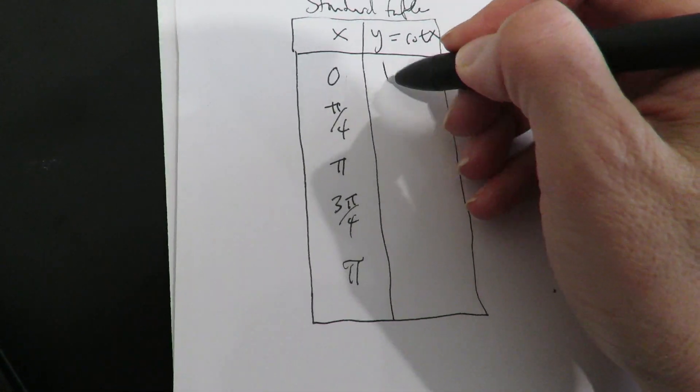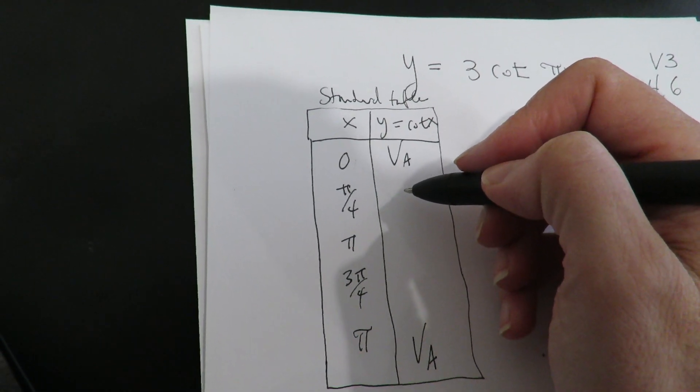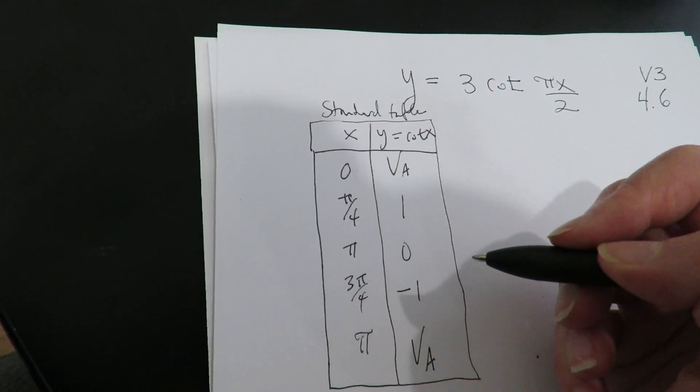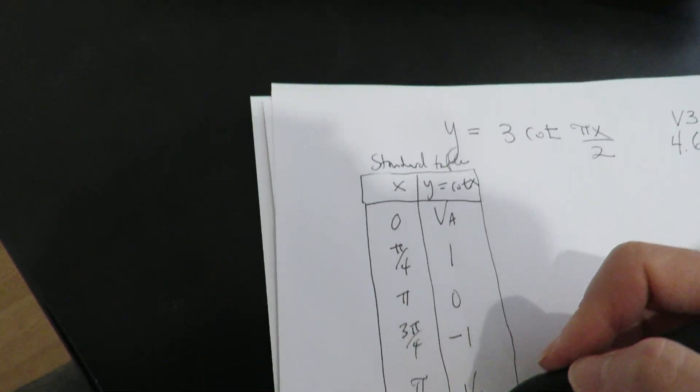Okay, so this is going to go downhill so it's going to have the VAs on the end. This is going to be 1, 0, negative 1 because you see as you plot the points, it's going to come down.